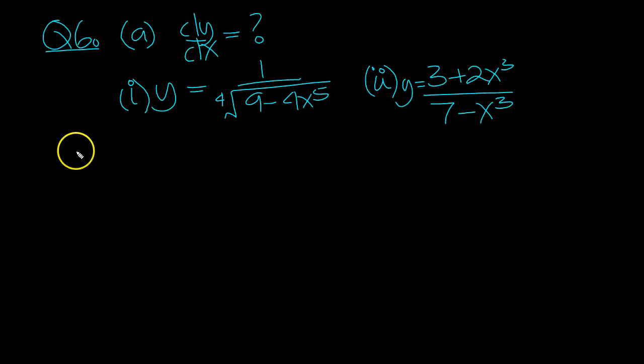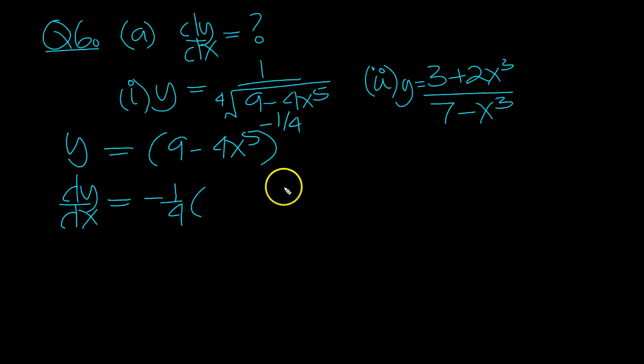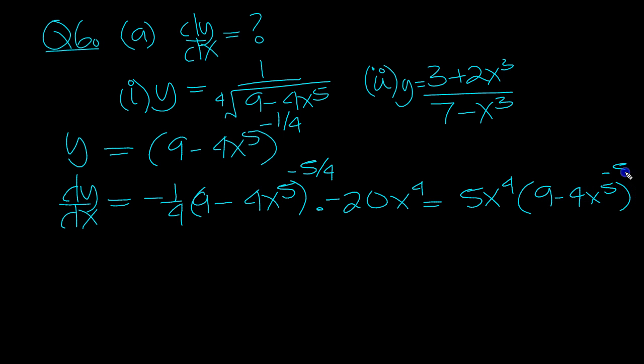The first thing to do is write y in user-friendly form. So I'm going to bring this up to the top. It's power quarter. But when we swing it up to the top, it flips the sign of the index to minus one quarter. So dy dx then, something to that, use the power rule, times the something to the one less, multiplied by the something differentiated, which is minus 20x to the 4. Minuses cancel, so we end up with 20 over 4 is 5x to the 4, times 9 minus 4x to the 5, to the power minus 5 over 4. So that's part 1.